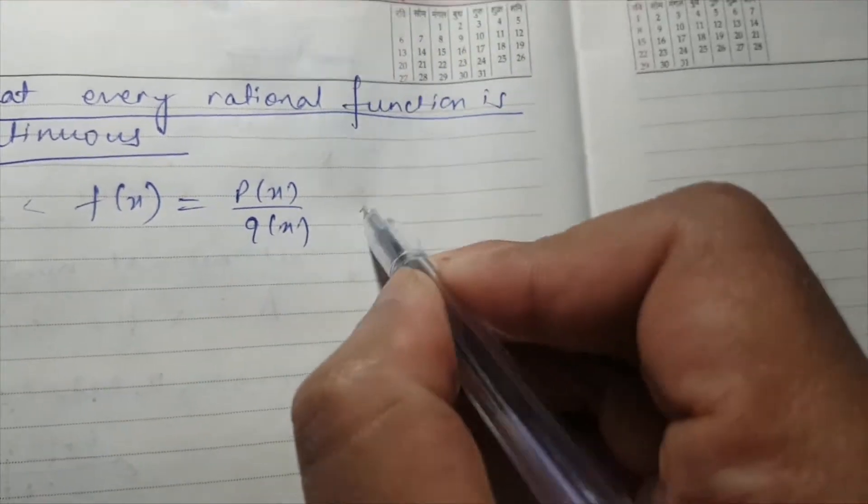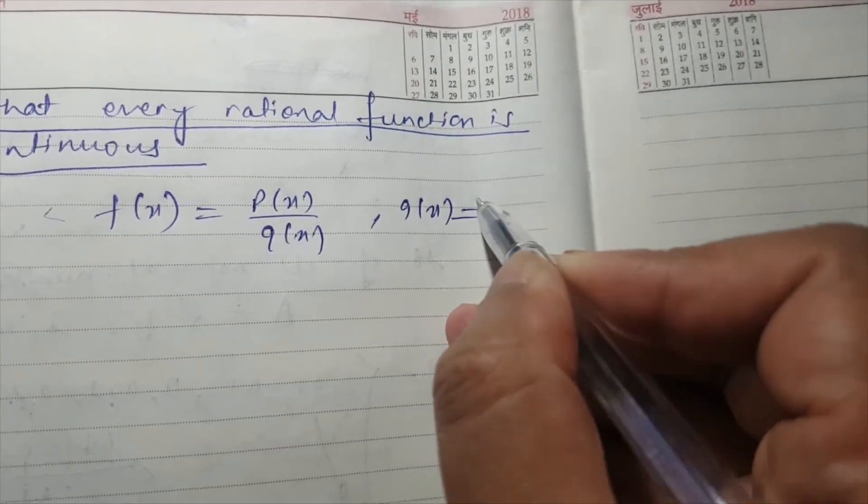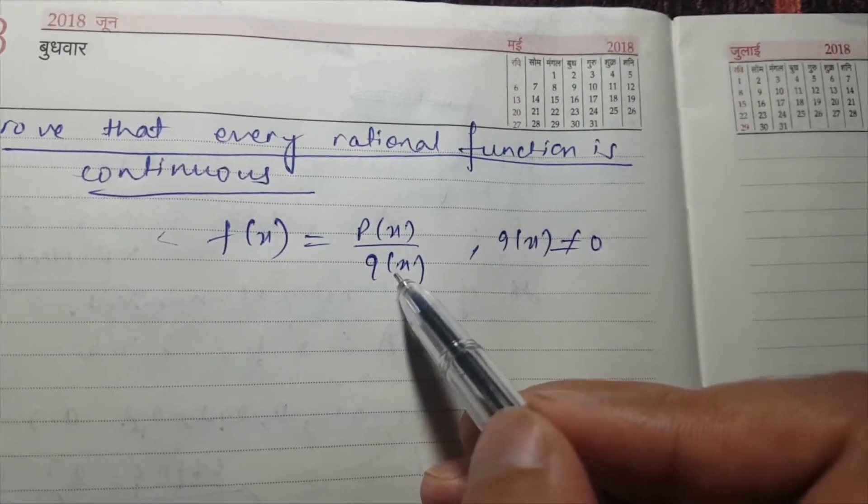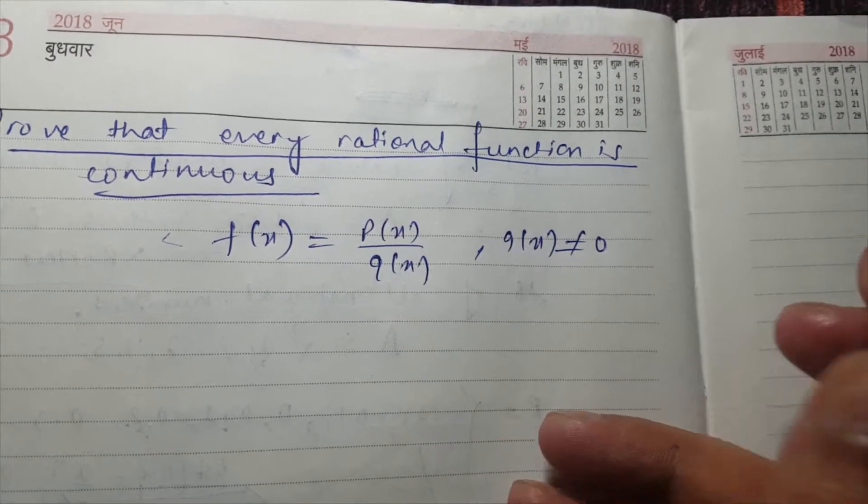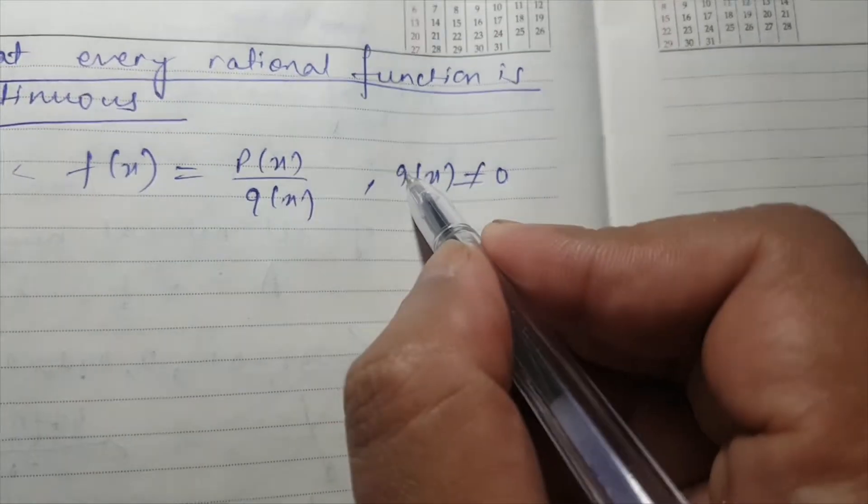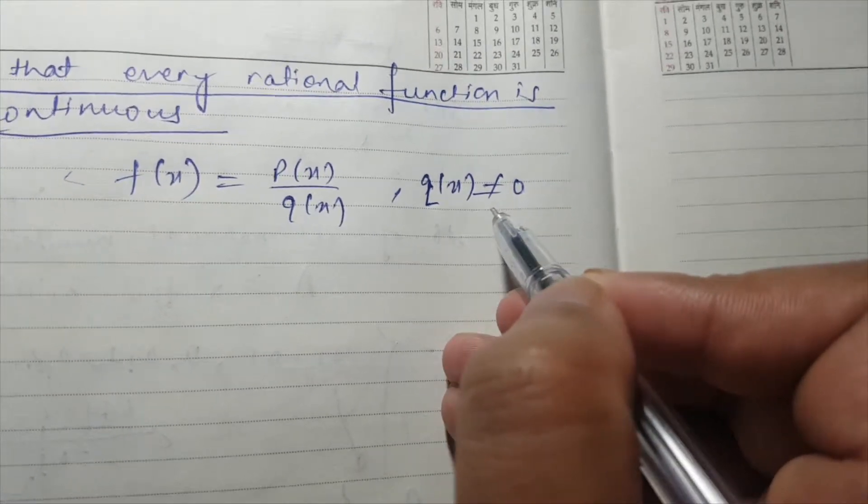where q(x) should not be equal to 0, because if it will be 0, then 1 upon 0 is undefined in mathematics. So we have one condition: q(x) is not equal to 0.